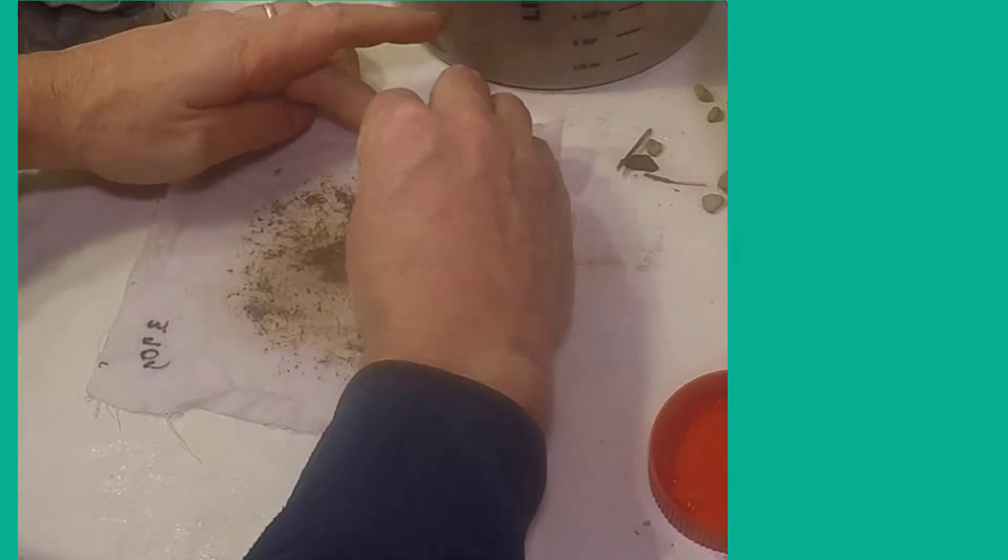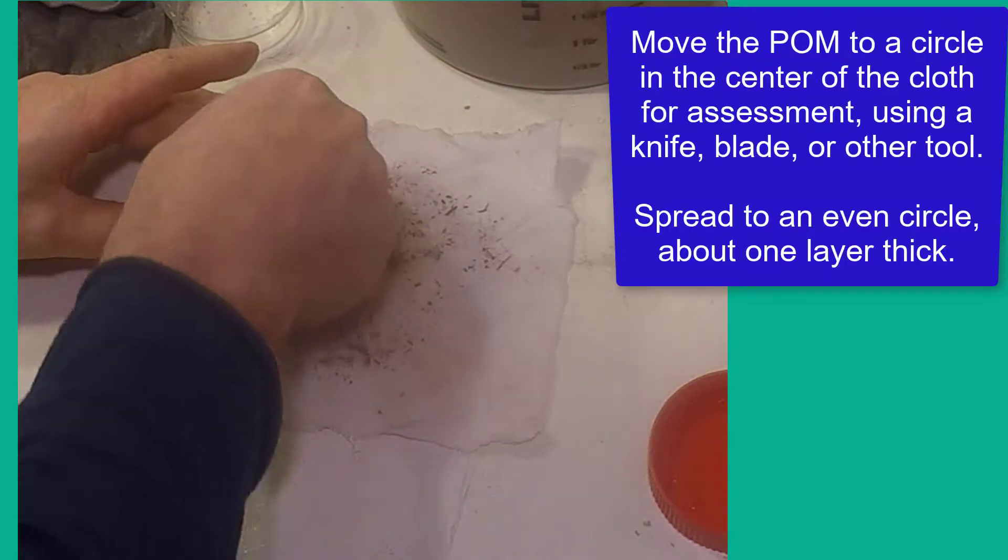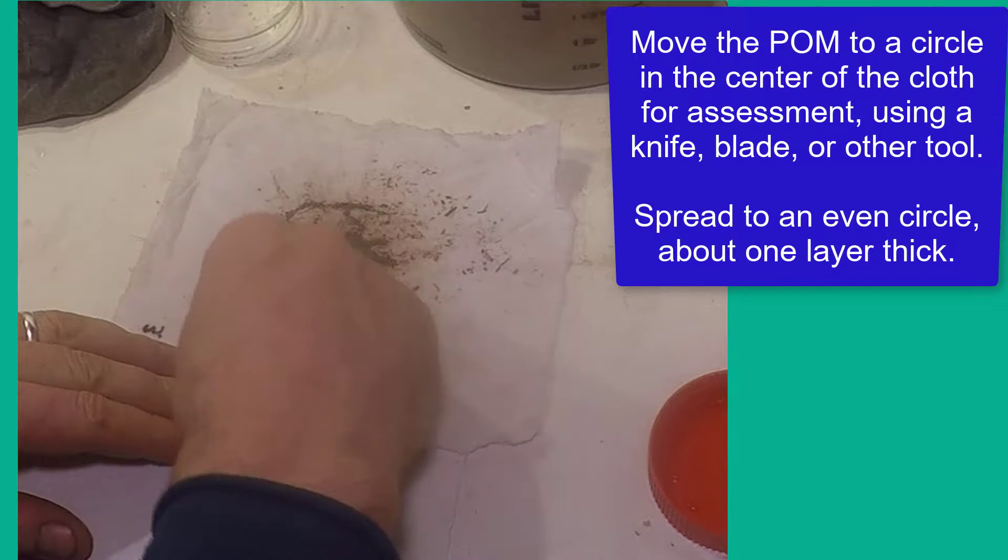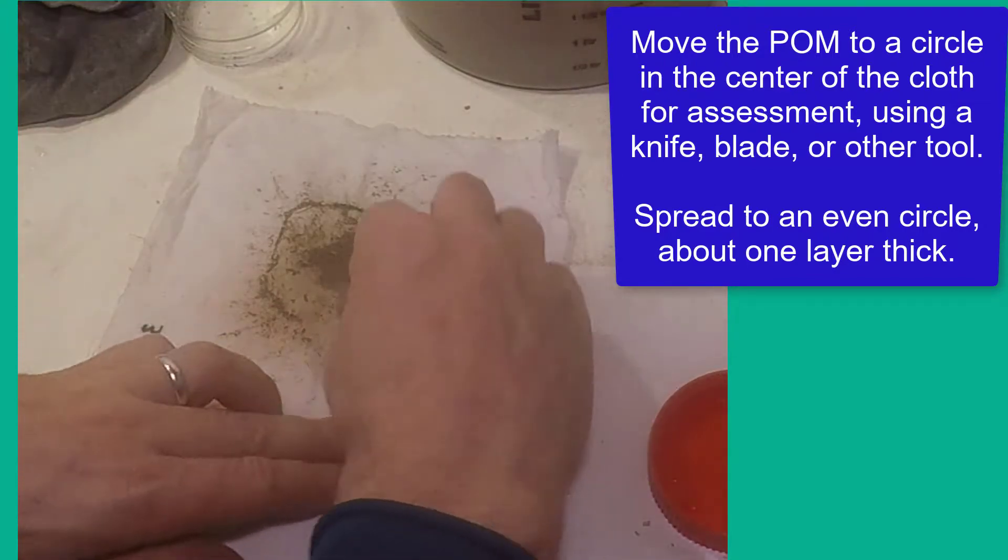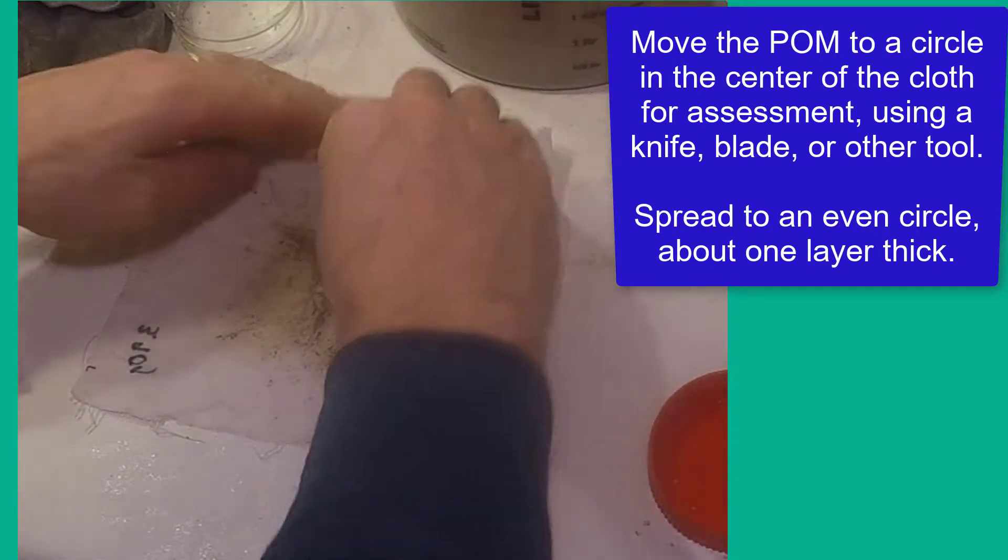Then, move all the material to the center of the cloth to form a circle. The diameter of this circle will give a qualitative rating of the amount of organic matter.